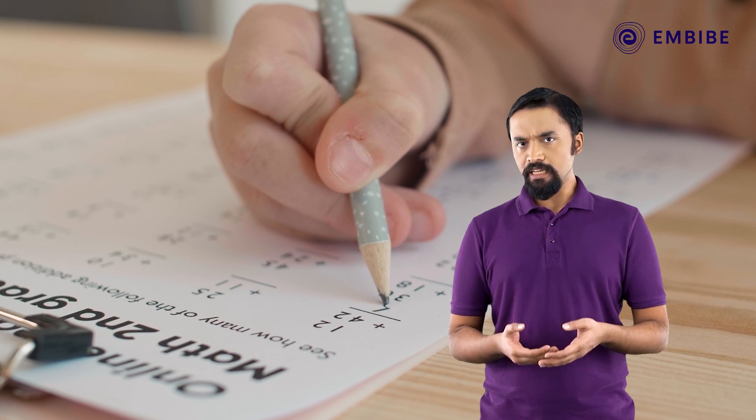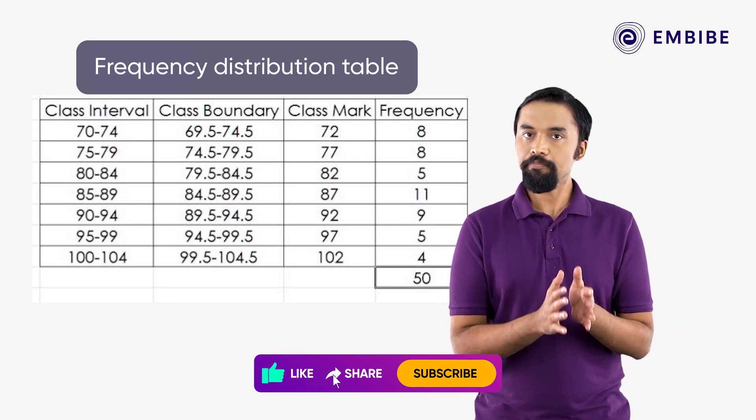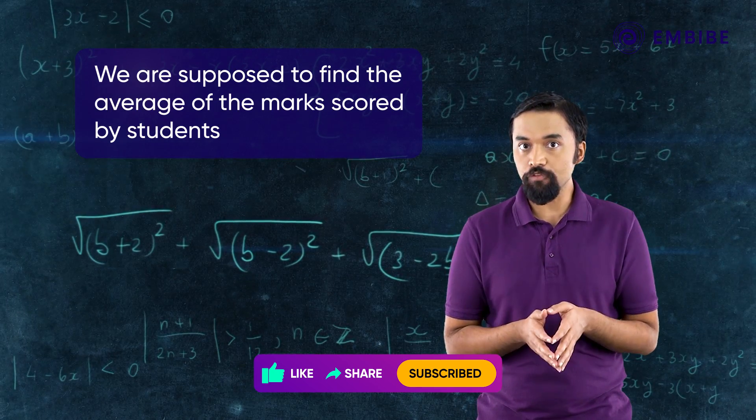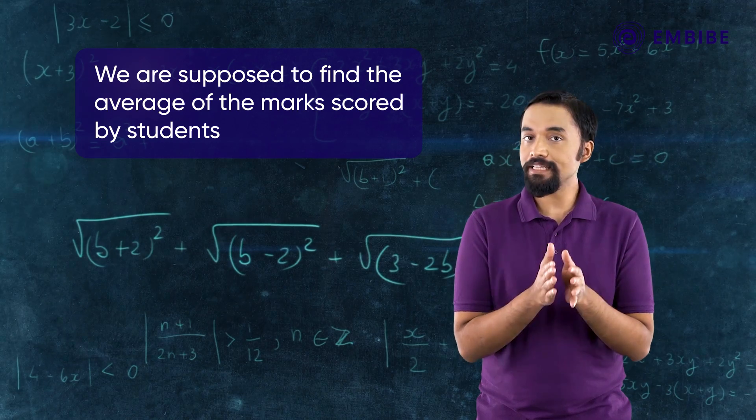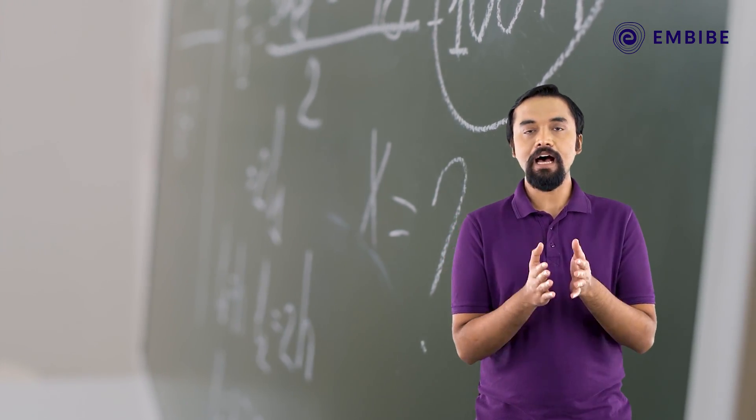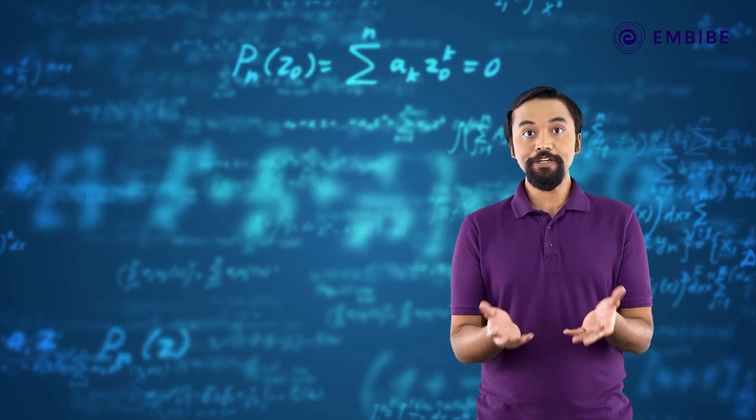A test was conducted among 50 students and a frequency distribution table was prepared based on their marks. We are supposed to find the average of the marks scored by the students. We will watch the video and understand how to calculate the mean when the class intervals are different.